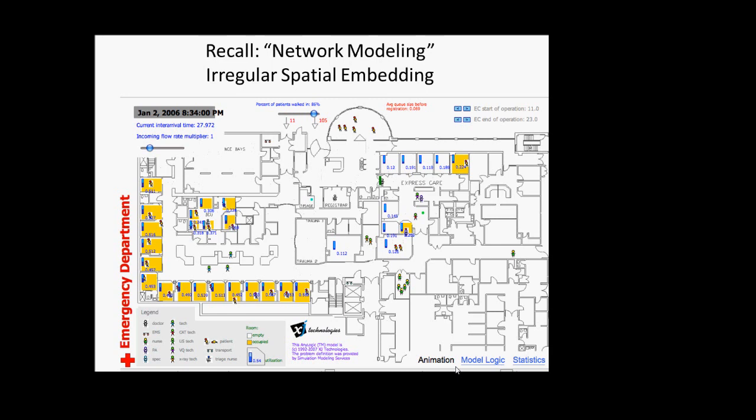Early on in the class we saw an example of a facility-based model where we had a hospital depicted. The hospital included, down in the lower left, a set of rooms and a set of resources such as might be associated with x-ray imaging, ultrasound, a waiting area, et cetera. This is an example of what I call irregular spatial embedding — you have people moving between rooms within the facility.